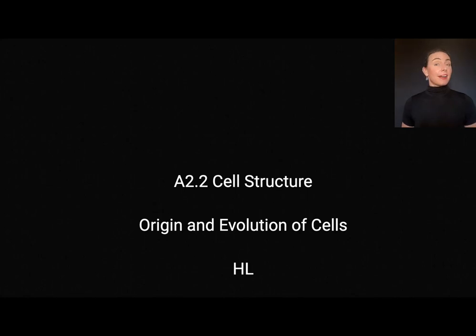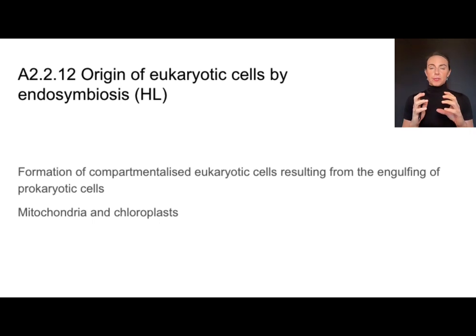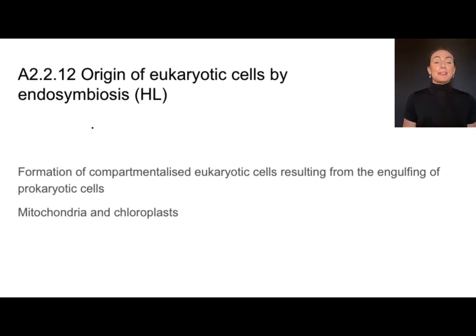This video will cover the higher level section of cell structure, and it's all about the origin and evolution of cells. We have a lot of evidence to suggest prokaryotes were the first cells to form, followed by eukaryotes much later. And there's a lot of supporting evidence that we'll talk about for this theory called endosymbiosis.